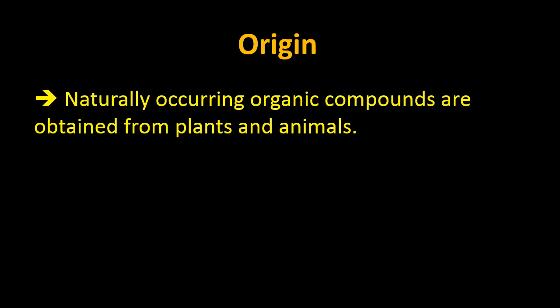The word origin means from where we get the organic matter. Naturally occurring organic compounds are obtained from plants and animals. All fossil fuel is made up of carbon, which changes into organic matter due to geological processes that occur on plants and animals.